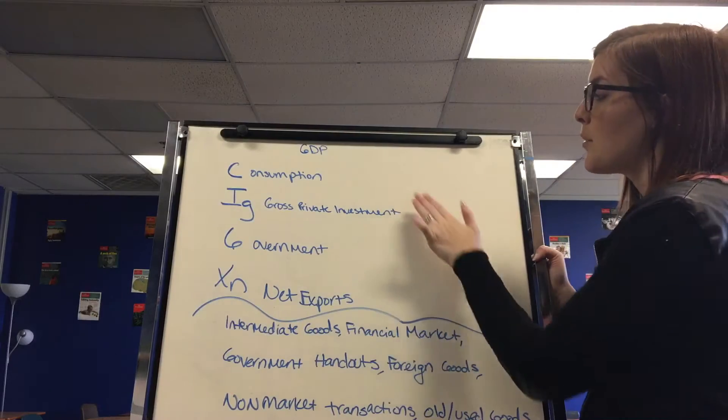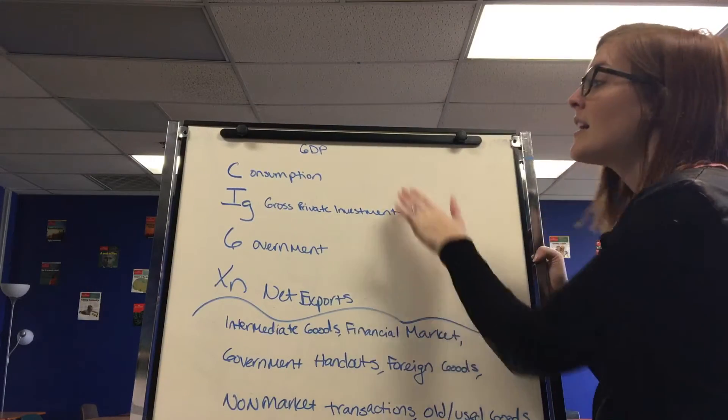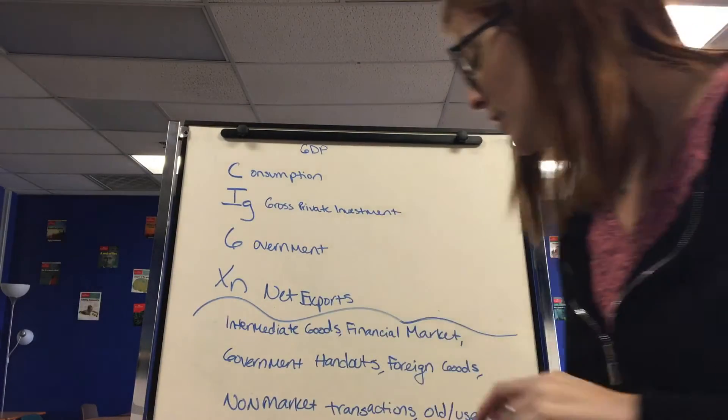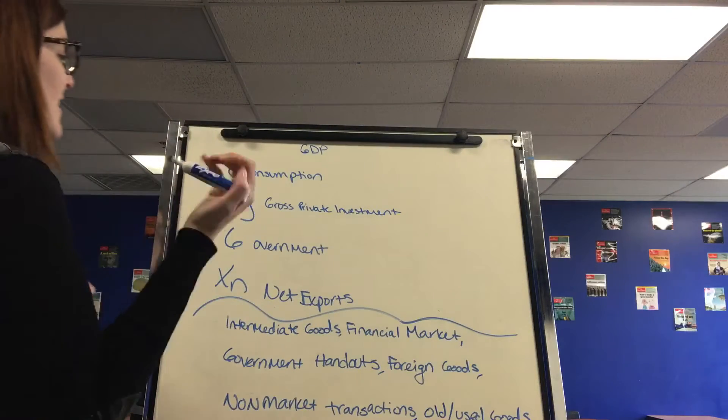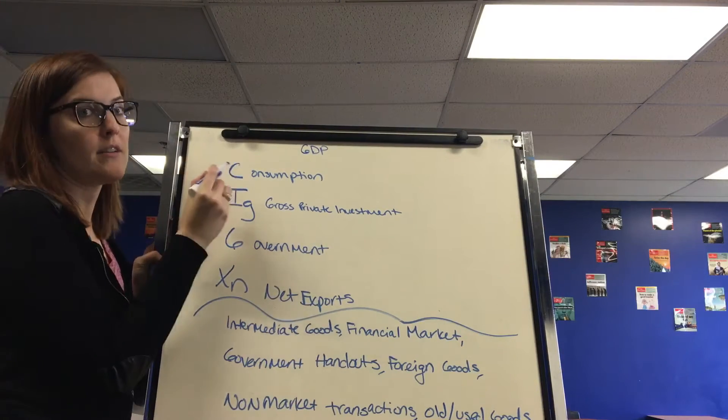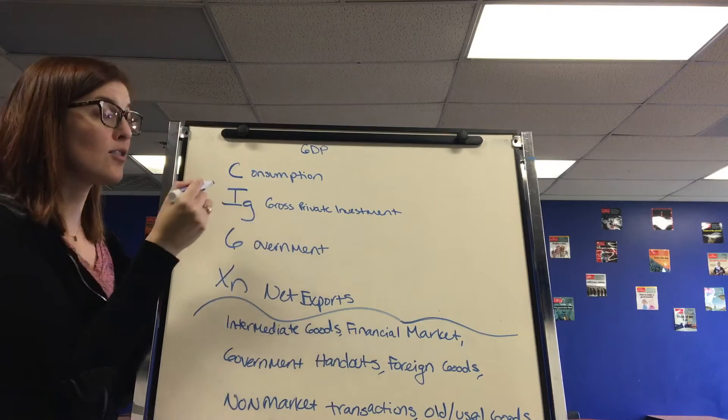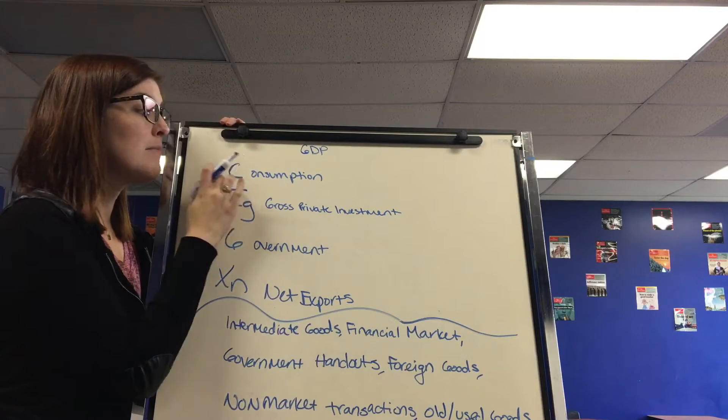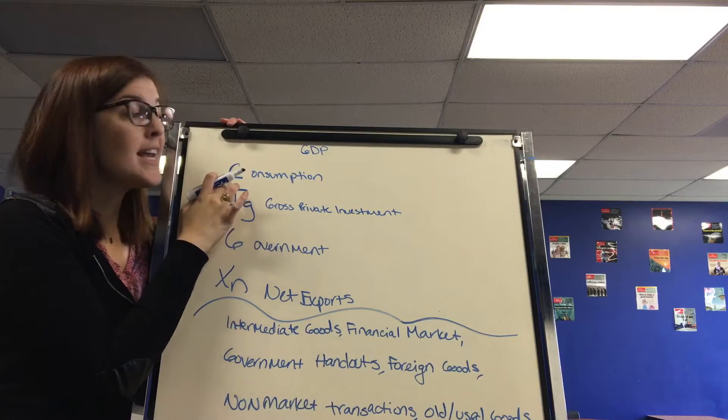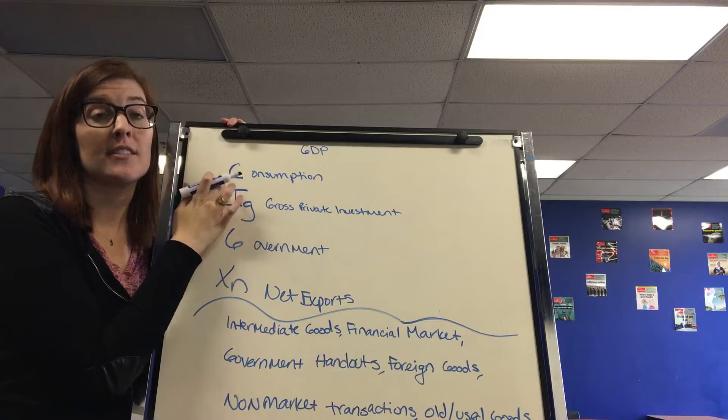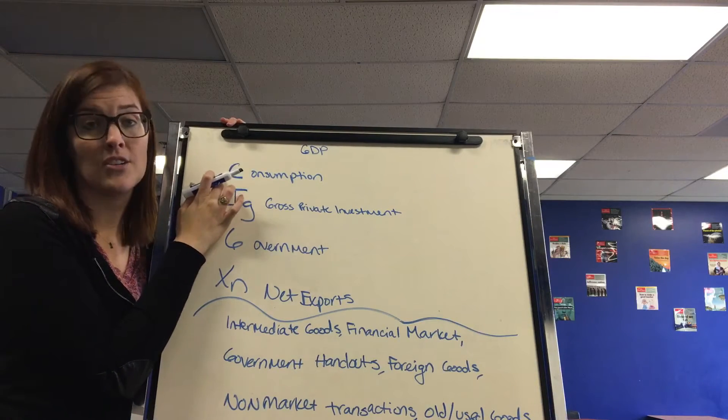Here are the components of the expenditure approach. Consumption is really important because consumption is the largest component of GDP. It makes up like two thirds or 67 percent of all GDP. So that's why to some, this is the most important component, namely the government. This is the one they focus on changing to fix a recession or inflation.